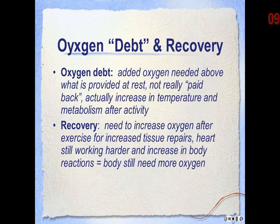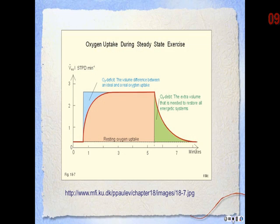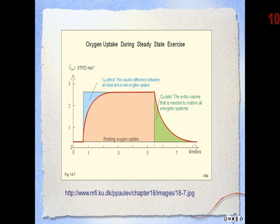We used to refer to the added oxygen needed above what is provided at rest as the oxygen debt. It is not really a debt that is paid back, because there is actually an increase in the oxygen needed after exercise. Initially it takes a period of time for the body to adjust its oxygen intake to meet the oxygen need. After activity, there is an increase in body temperature, the heart is working harder, there are more tissue repairs and more chemical reactions, creating an increased demand for oxygen after exercise. During recovery, we need to increase oxygen intake to make these repairs and meet the increased needs of the body.